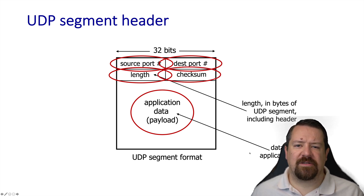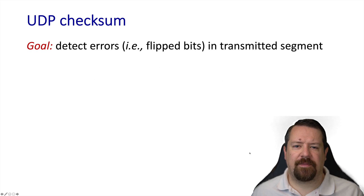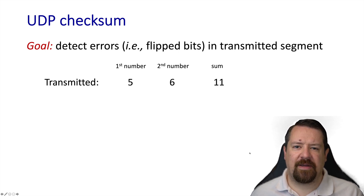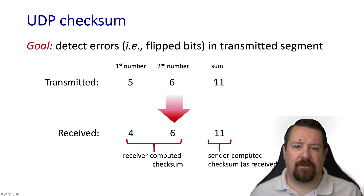Next, we're going to talk a little more about the checksum and how that works. Networks at various points can introduce errors, meaning some bits can be changed as they're transported through the network and so they're incorrect on arrival. The goal of the checksum is to find out if this happened. A very simple way to do this is to add up all the values sent and to send along the sum with the original values. Then if one of the values changes in transit, we'll know that the numbers don't add up. The receiver can compute the checksum and can see that it's not the same as the sum it received from the sender.